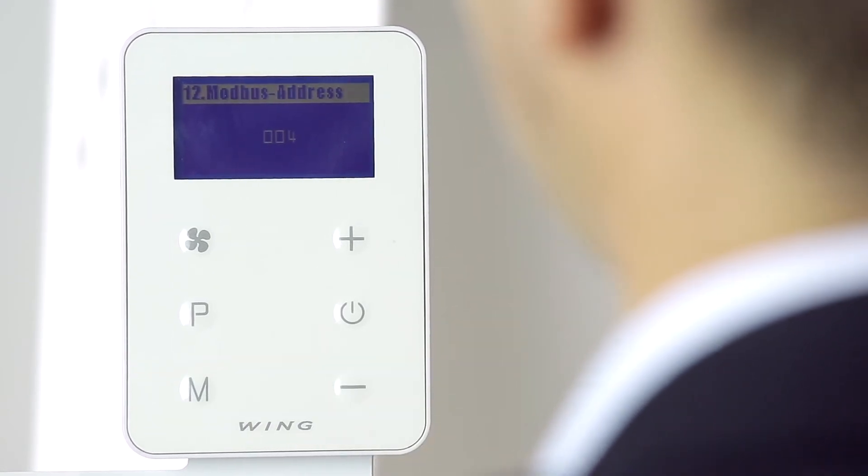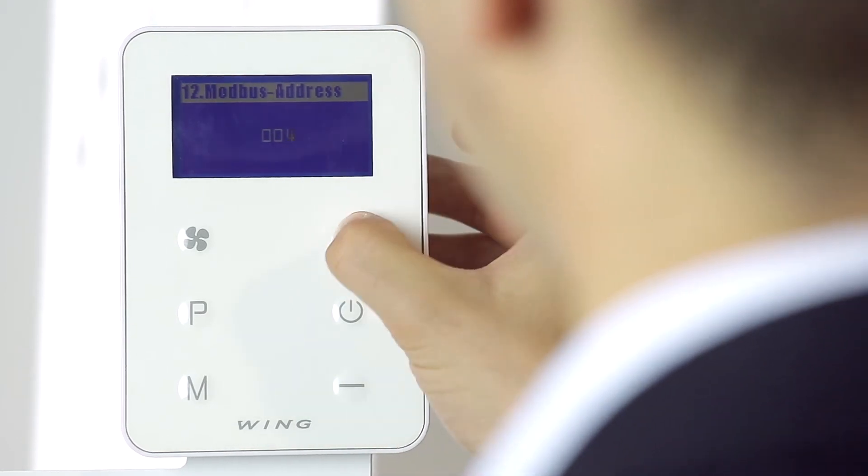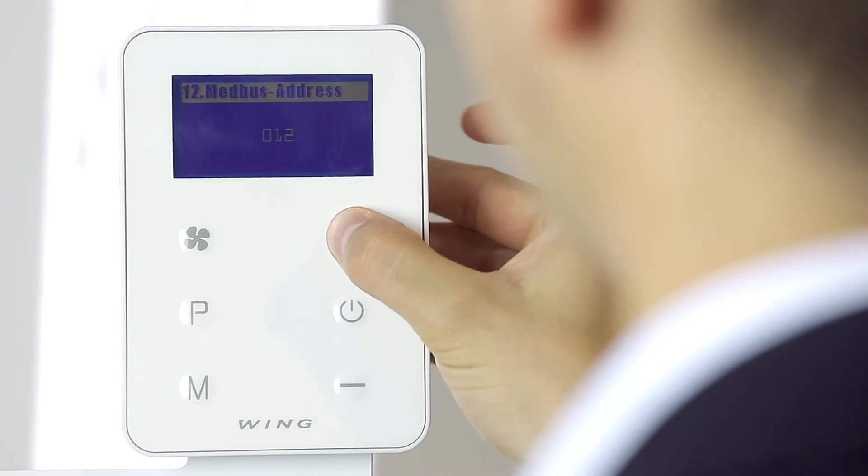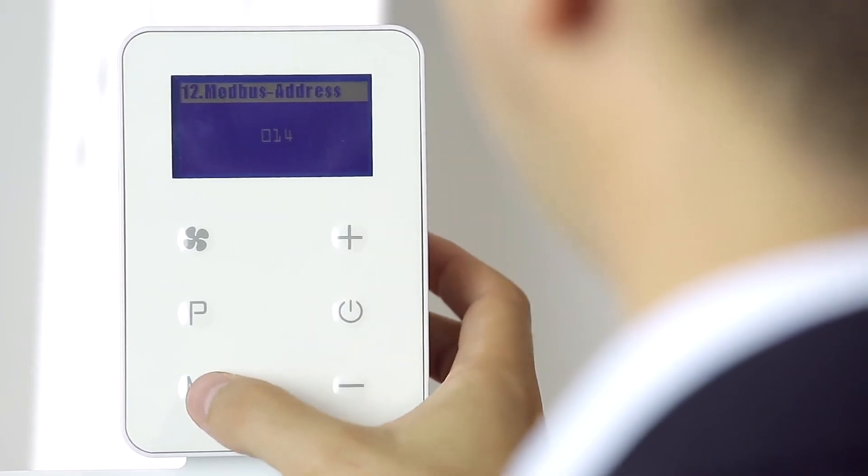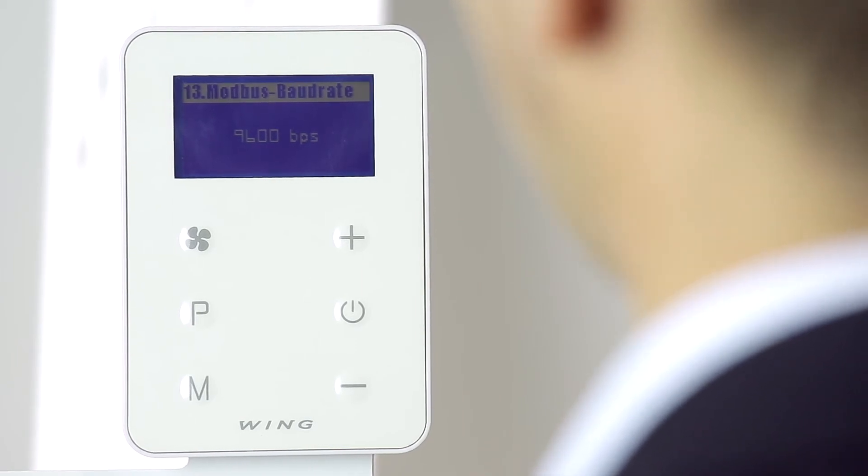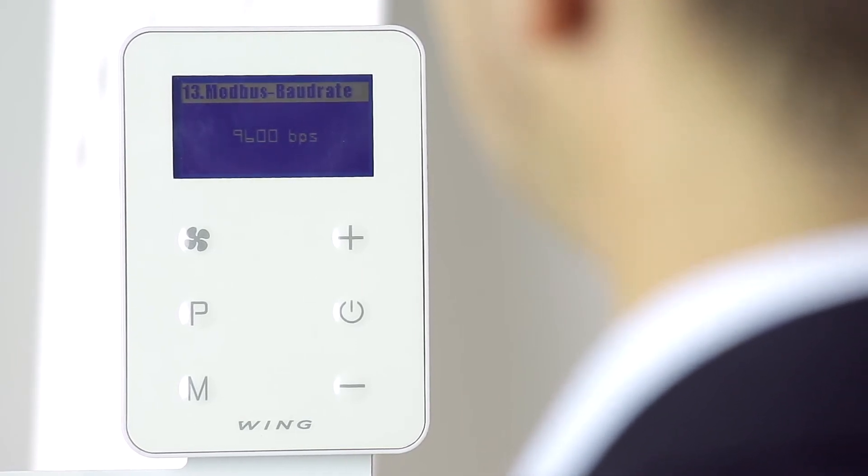In setting number 12, we can change the address assigned to the BMS system. We can change the speed as well as the parity and oddity of the connection.